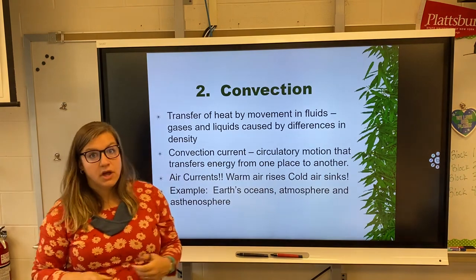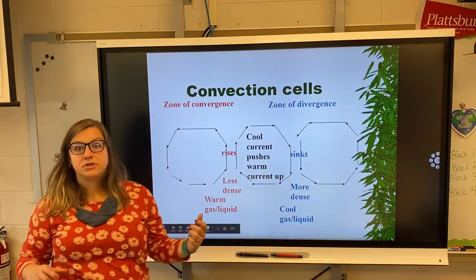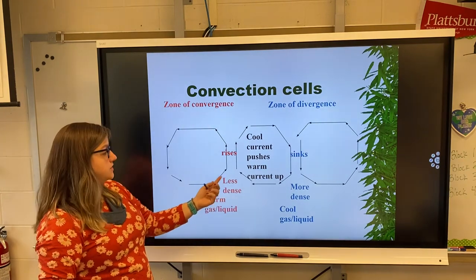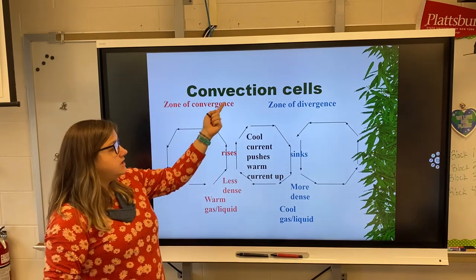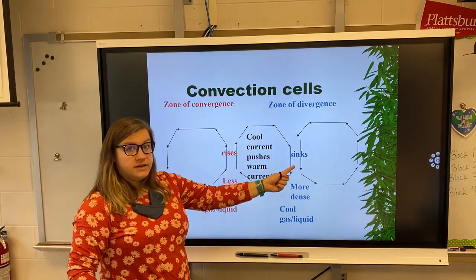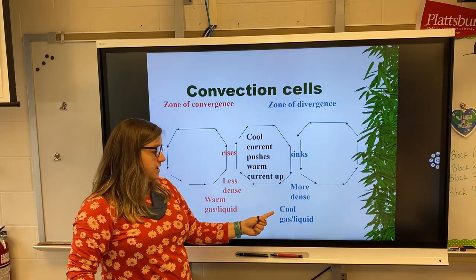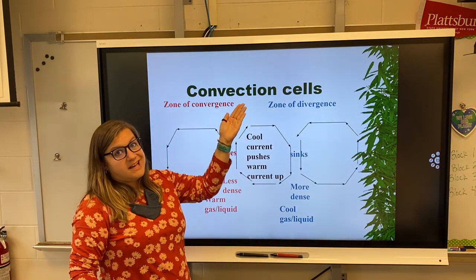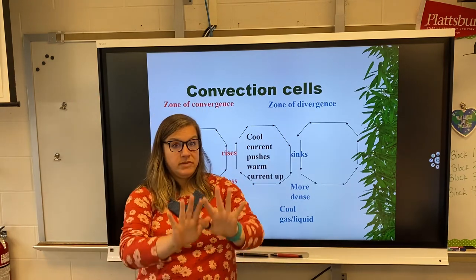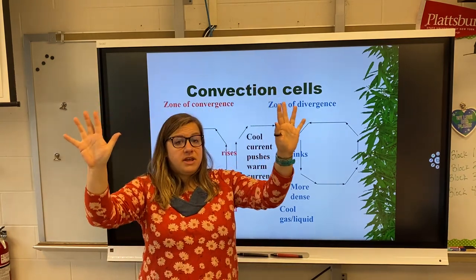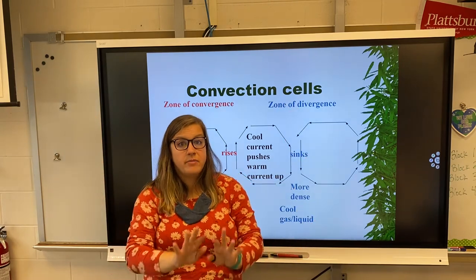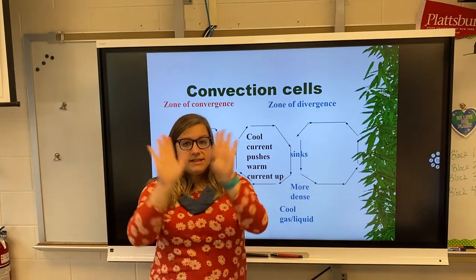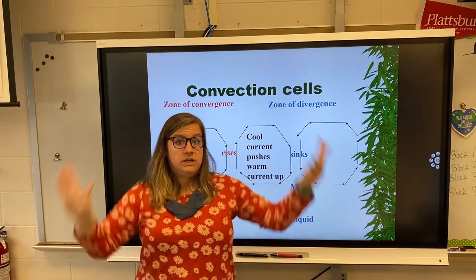Warm gas or liquid is less dense, so it's going to rise up until it starts to cool down. Cool air sinks because it is more dense, so cool gases or liquids are going to be at the base while warmer gases or liquids are at the top. It goes through this cycle: warm fluid rises, cools down, becomes more dense, sinks back down, then warms up again and rises. This is convection.